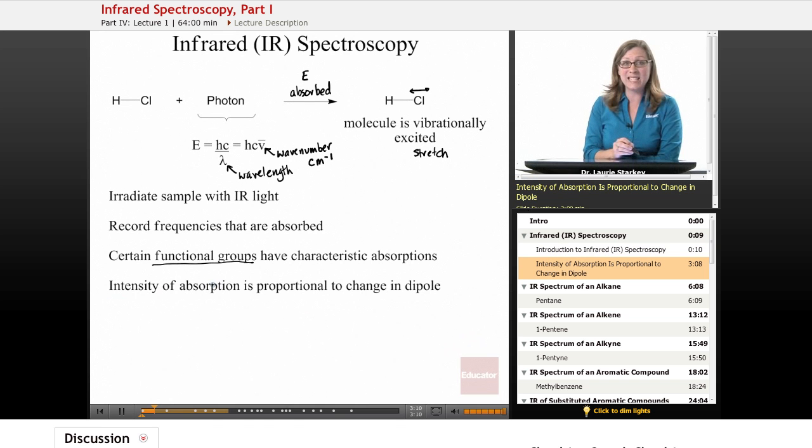Now it turns out that the intensity of the absorption, how strongly the molecule absorbs that light, is proportional to the change in dipole. So if we have something that is not polar, a bond that is not polar, then it's not going to be something that will absorb IR light.